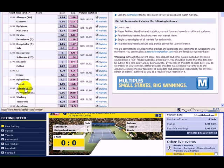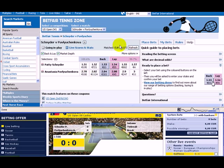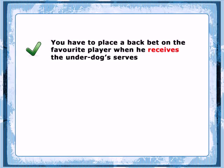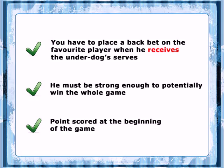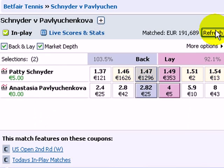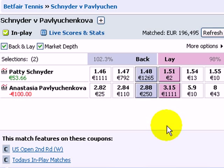So let's enter the Betfair market and get ready for trading. Position the LiveScore window and the Betfair market so that you can follow both websites. Now, the trigger factor you should be looking at: you have to place a back bet on the favourite player when he receives the underdog's serves. But there's only one condition — he must be strong enough to potentially win the whole game, and a point scored at the beginning of the game is evidence good enough. Ideally, you should look for a situation when the favourite player has won the previous game with an obvious advantage. Right now the favourite player scored a point while receiving a serve from the underdog, so this is a good moment to place a back bet on him. I'm going ahead with it and the bet is matched.